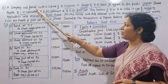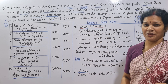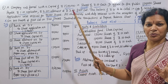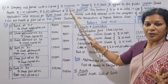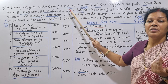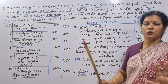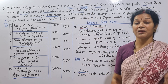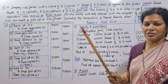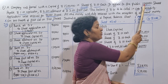A company was formed with a capital of 15 lakh, in shares of 10 rupees each. That gives us 1,50,000 shares in total. The company authorized 1,50,000 shares and offered to the public 1,00,000 shares.